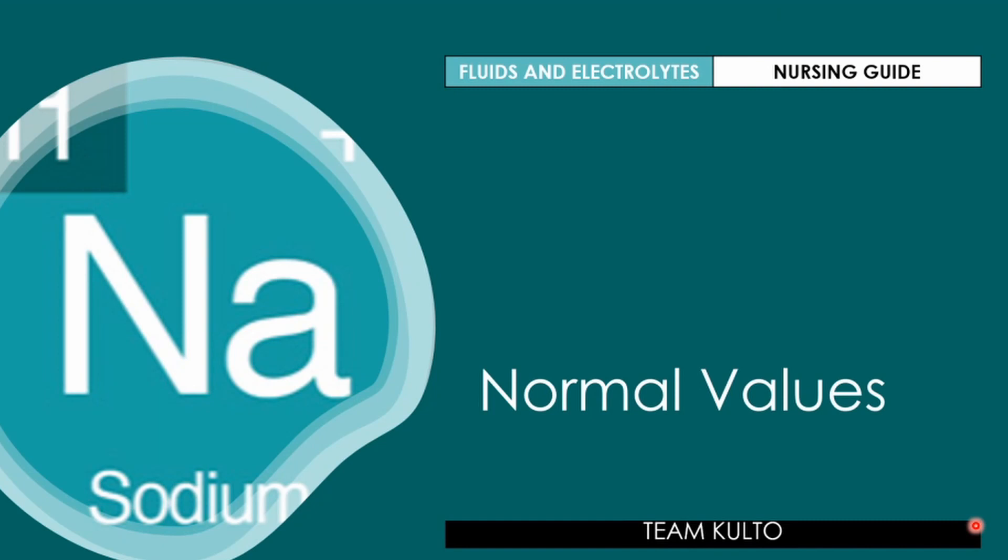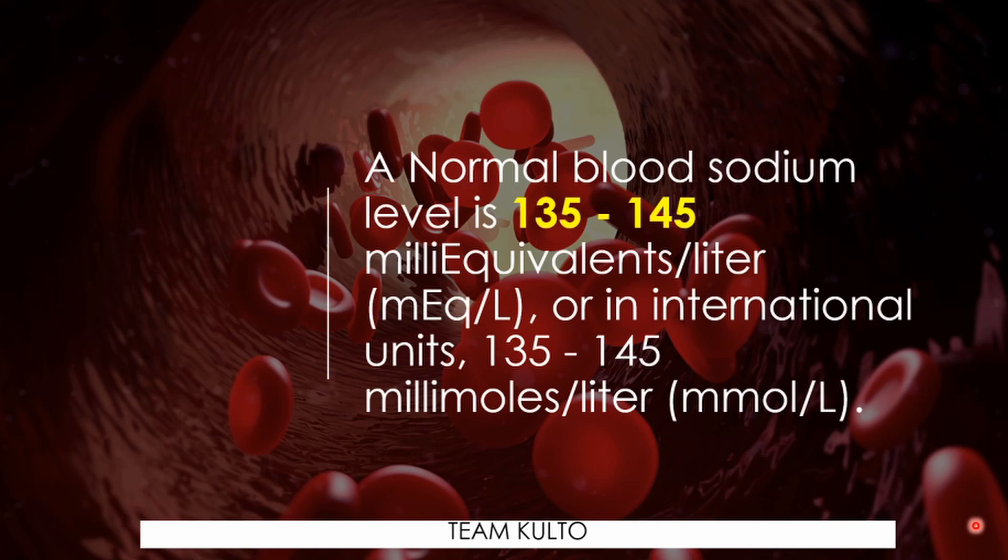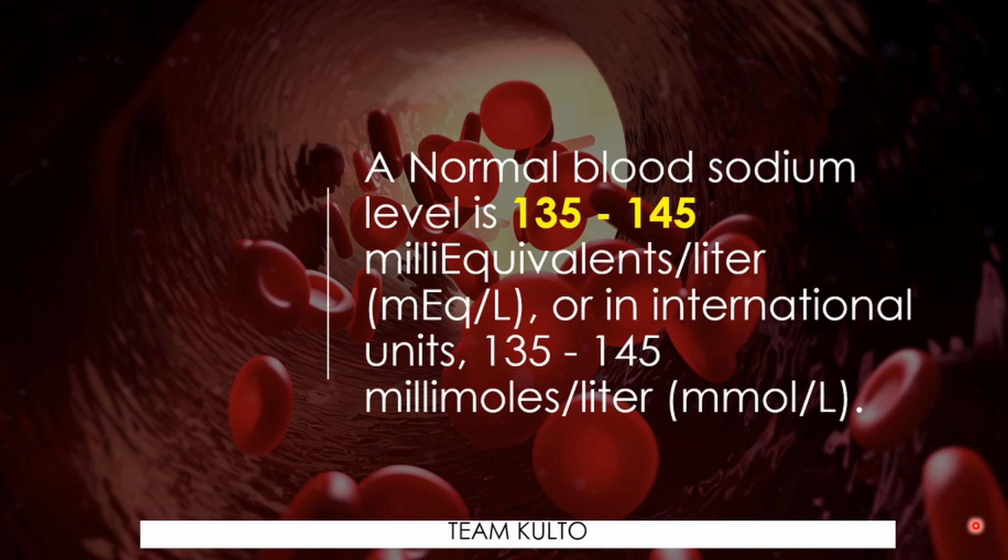So what are the normal values? Normal blood sodium is 135 to 145 milliequivalents per liter. Remember that: 135 to 145.